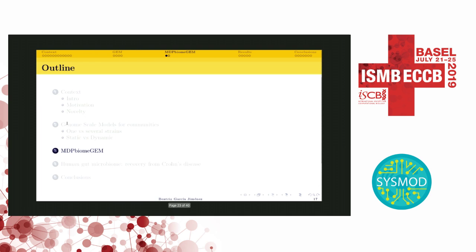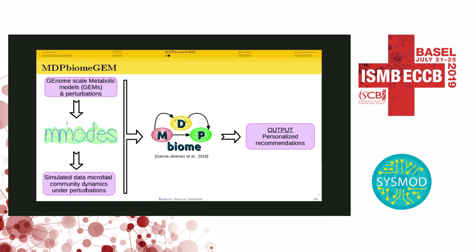M-mode stands for Metabolic Models-based Ordinary Differential Equation simulation. It combines different properties required to represent a complex microbial community such as a microbiome, being multi-strain, dynamic, and high-resolution. Most importantly, it allows us to include perturbations over time and check how the community evolves. The new system NDP Biome GEM takes as input different genome-scale models from microbes of interest, to combine in a microbial community, along with defined perturbations. This information goes into M-mode, a Python package based on state-of-the-art genome-scale model technologies — COBRA, flux balance analysis, ordinary differential equations — and we get simulated data of the microbial community under perturbation.